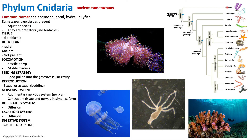Porifera was Parazoa, so it had no true tissues. Cnidarians are Eumetazoans, and all organisms from here on forward will be Eumetazoan, meaning they will have true tissue. Cnidarians are also mainly aquatic species. What's unique to cnidarians compared to Porifera is that they are predators, able to use their tentacles to capture and kill prey. The common names for organisms within this phylum are sea anemones, corals, hydra, and jellyfish. Cnidarians are our ancient Eumetazoans.